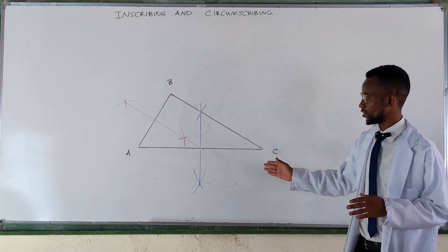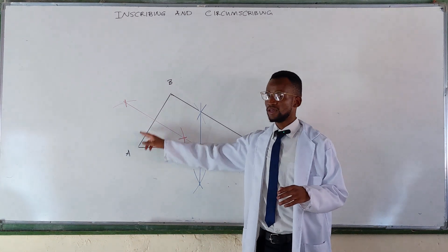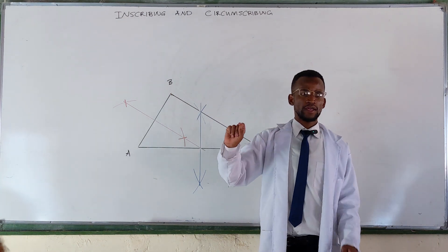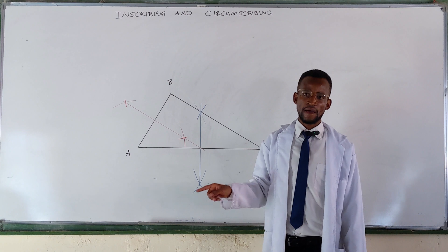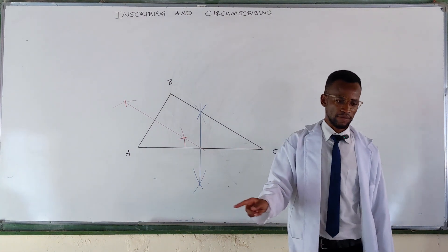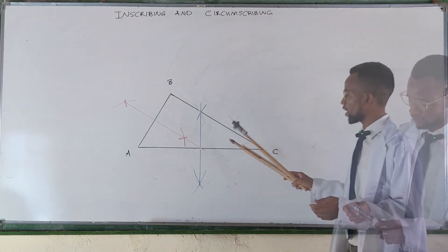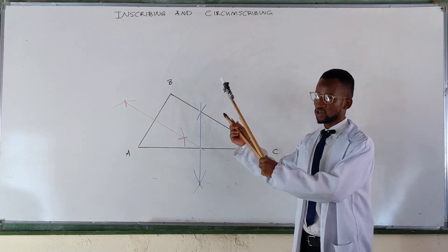You bisected line AC and line AB there. And then, where the two perpendicular bisectors are meeting, that is your center point. That is the circumcenter. So you place your compass at this point and then open it to any of the three corners.